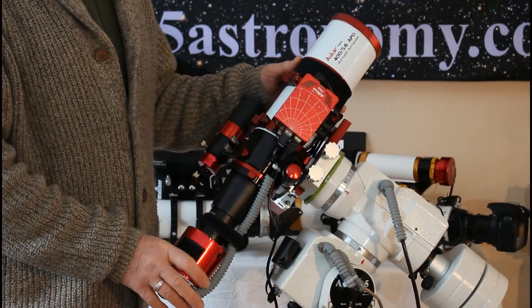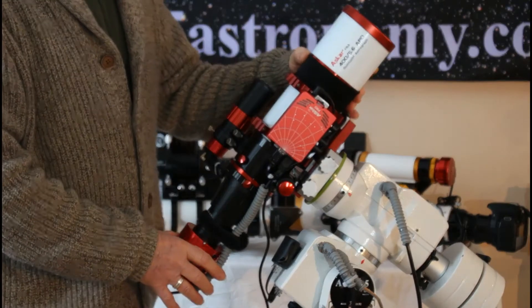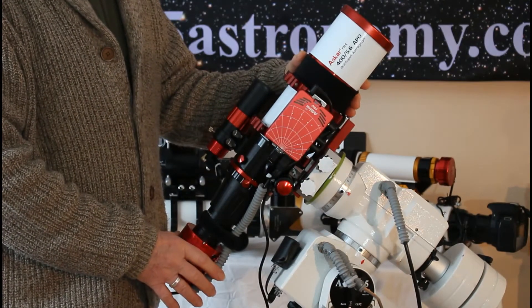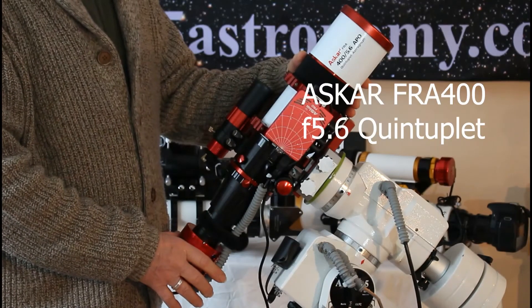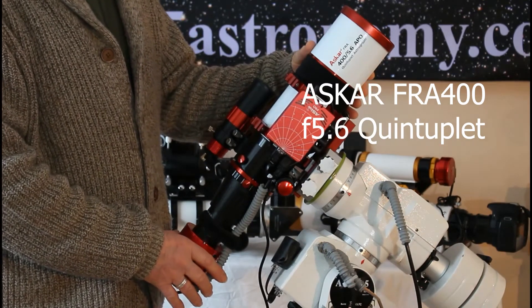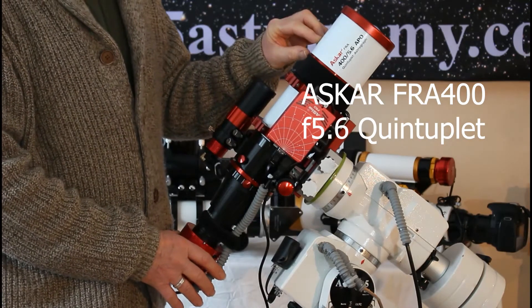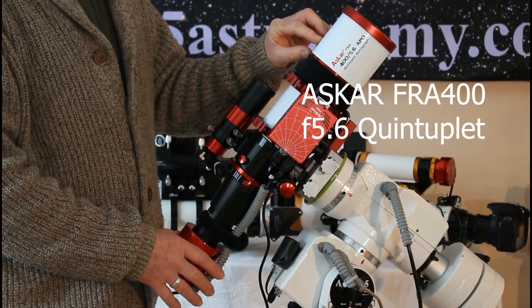Moving up in size from the smaller scopes that we saw behind us, this is now a 72mm apochromatic astrograph. Apochromatic means that it has very little chromatic aberration. And this is achieved by having a triplet objective lens using extra dispersion glass.